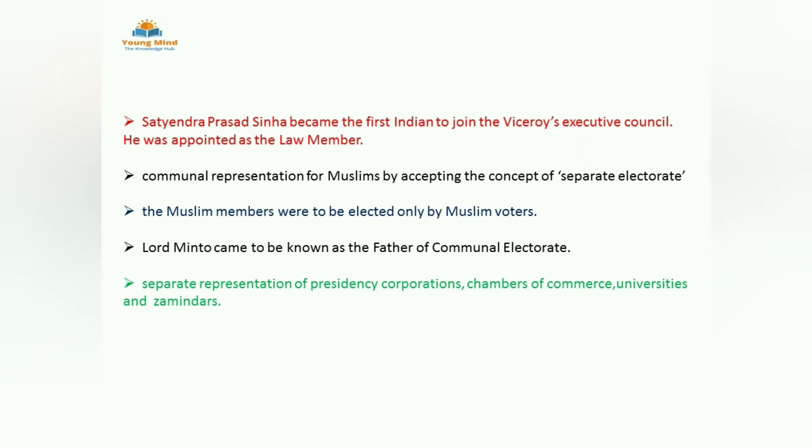Here they introduced the divide and rule policy — differentiating Indians as Hindus and Muslims, separating Indians through religion. Separate representation was given to presidency corporations, chambers of commerce, universities, and zamindars. The reason for all this was to avoid people from coming in contact with the Indian National Congress, as they feared the INC was developing patriotism in Indians.